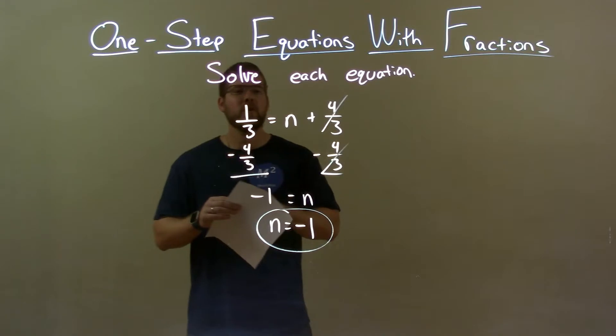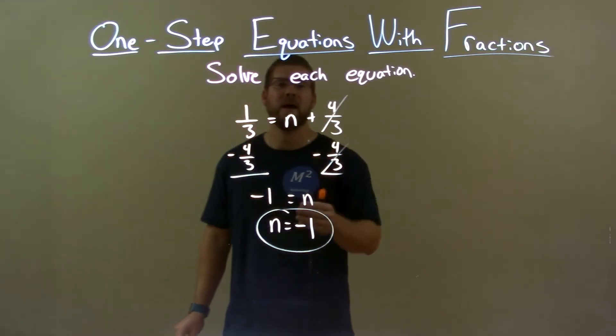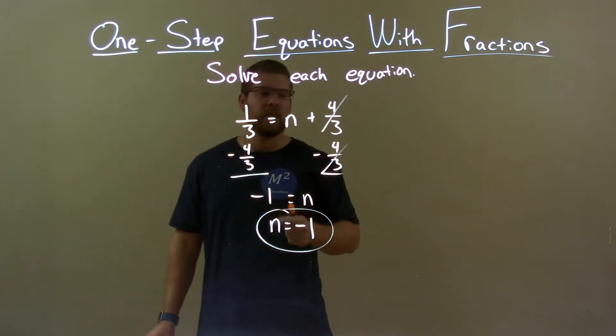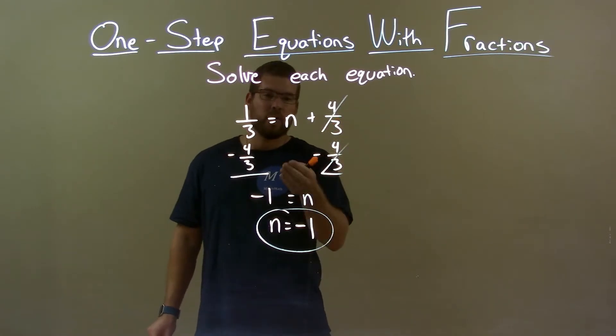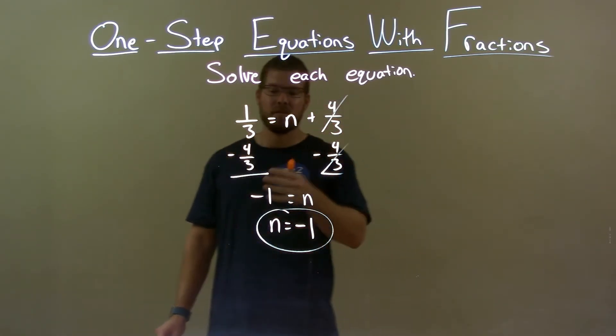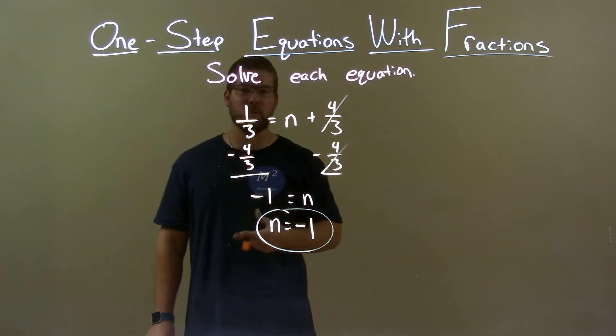Quick recap, we're given one-third equals n plus four-thirds, and we have to solve for n. Well, I want to subtract four-thirds from both sides, that gave me n by itself, and on the left, our final answer is just negative one.